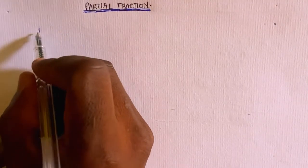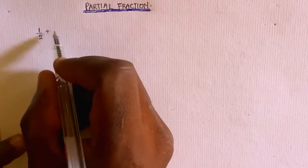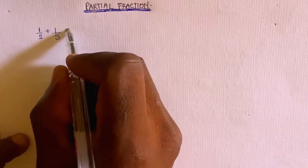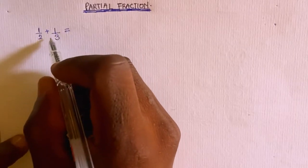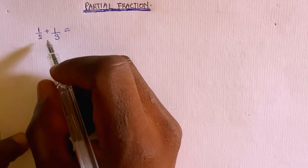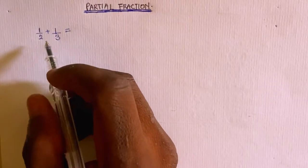Welcome to mathematics class. In this video I'll be talking about partial fractions. Suppose you are given 1 over 2 plus 1 over 3 and you are asked to add them together. The first thing is that you are going to find the LCM.